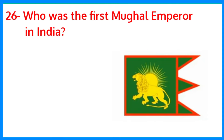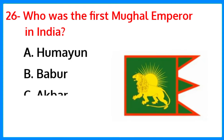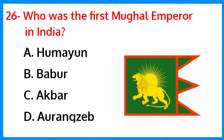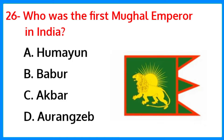Who was the first Mughal emperor in India? The correct answer is option B — Babur.